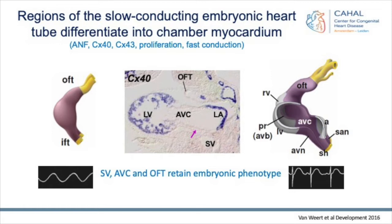If you look at the cardiac conduction system, the pacemaker activity first starts at the inflow of the tubular heart, and then you get the activation-contraction pattern, which in the tubular heart is slow and peristaltic. Then you have the looped heart, and it gets sequential atrial and ventricular activation, with areas of slow and fast conduction. Finally, you have the rapid atrial and ventricular activation on the inflow of the sodium channel. Then you have to have a conduction system with an AV node, maturation of the His-Purkinje system, and also annulus fibrosis formation.